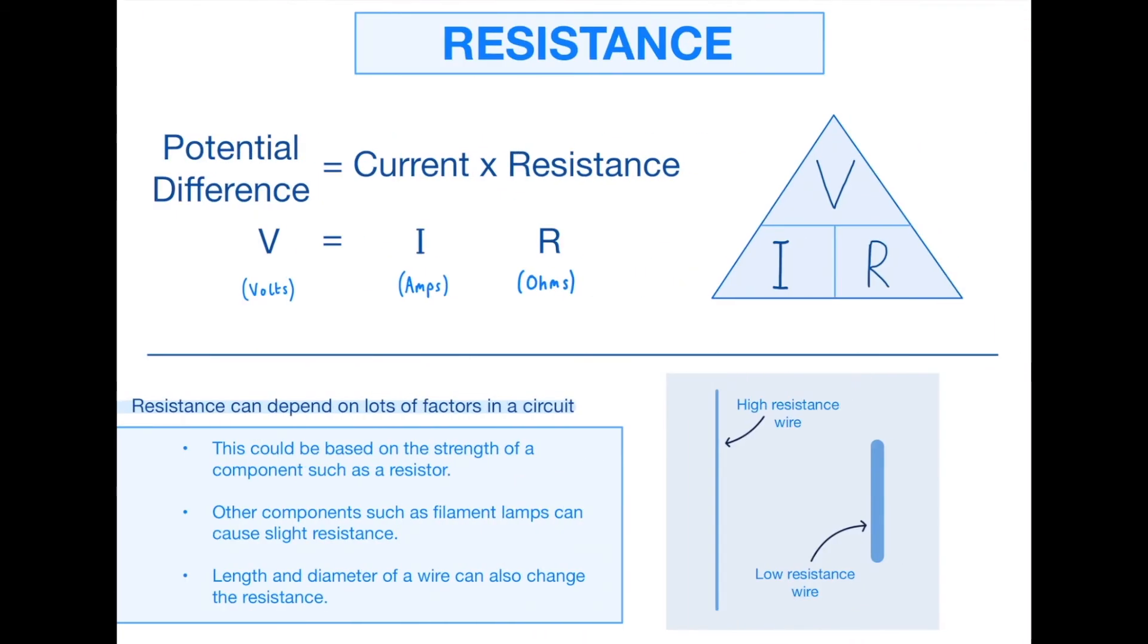Next, we have resistance. Potential difference equals current times resistance. This is something called Ohm's Law, which is a very important thing. You may see it in exams by the name. Just remember this equation when you see Ohm's Law. V equals IR, and again, volts, amps, and resistance is ohms, O-H-M-S. I've written the triangle on the right-hand side. If you're not familiar with the triangle, let me know down below and I will explain it to you. It's an invaluable way of rearranging these equations, which you need to know.